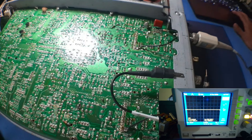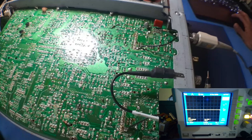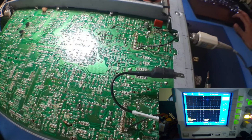One problem is the signal is grounded. The signal is shorted to ground. But if you have a problem with the 2SK304 J-FET, you can see the problem with the error point.